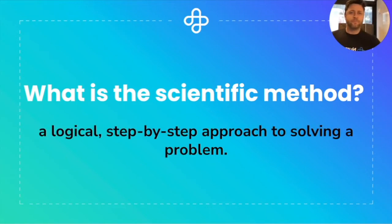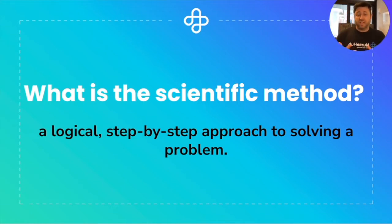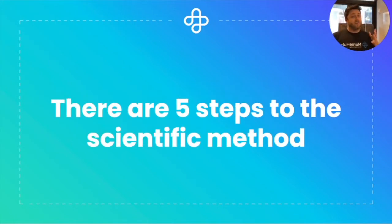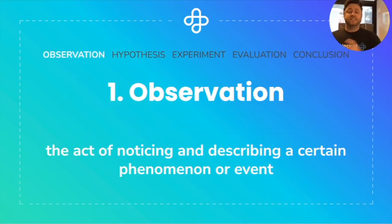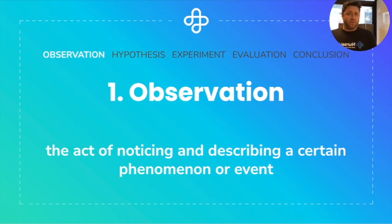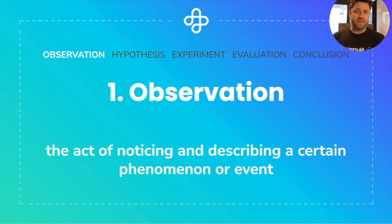What is the scientific method? Well, the scientific method is a logical, step-by-step approach to solving a problem. You also use the scientific method likely every single day. In fact, I used the scientific method last night when trying to figure out why my phone wouldn't charge, which is probably something that's happened to you. There are five steps to the scientific method. Step number one is making an observation — the simple act of noticing and describing a certain phenomenon or event. When my phone wasn't charging last night, I noticed: 'Hmm, that's weird. I plugged it in. It should be charging, but it's not. I wonder why.' That is the observation — the very first step in the scientific method.